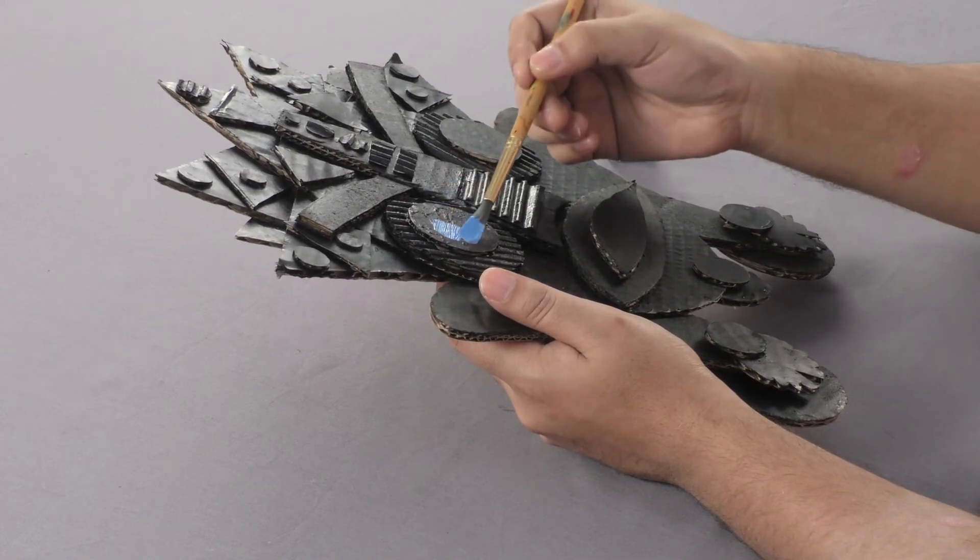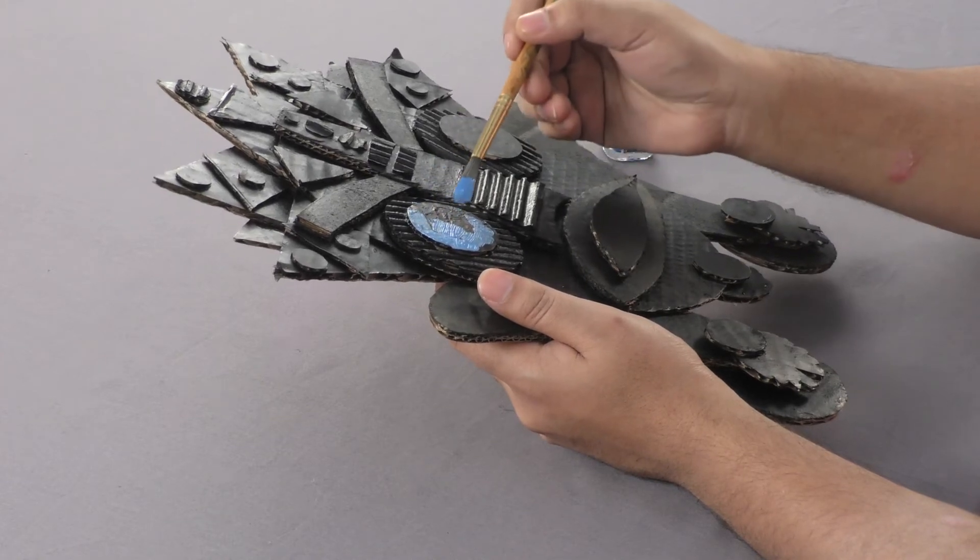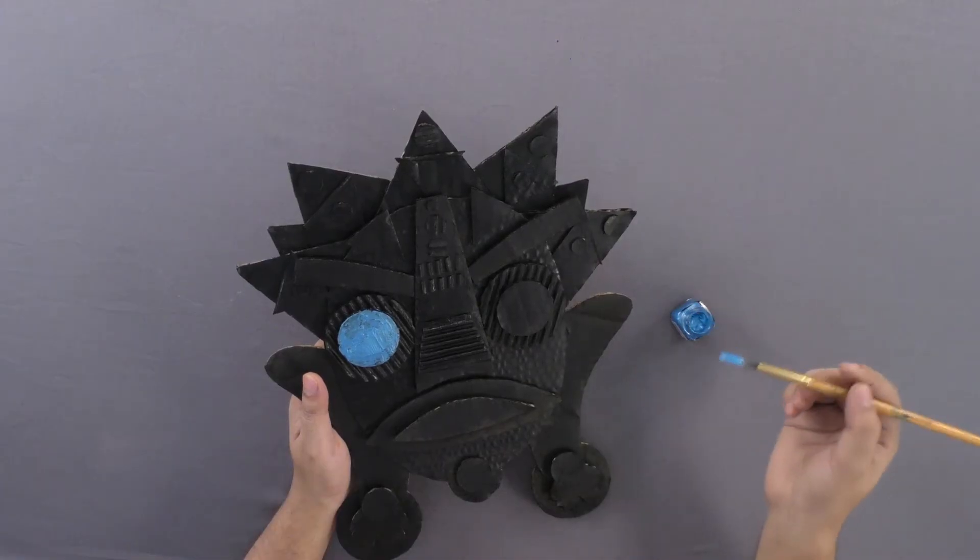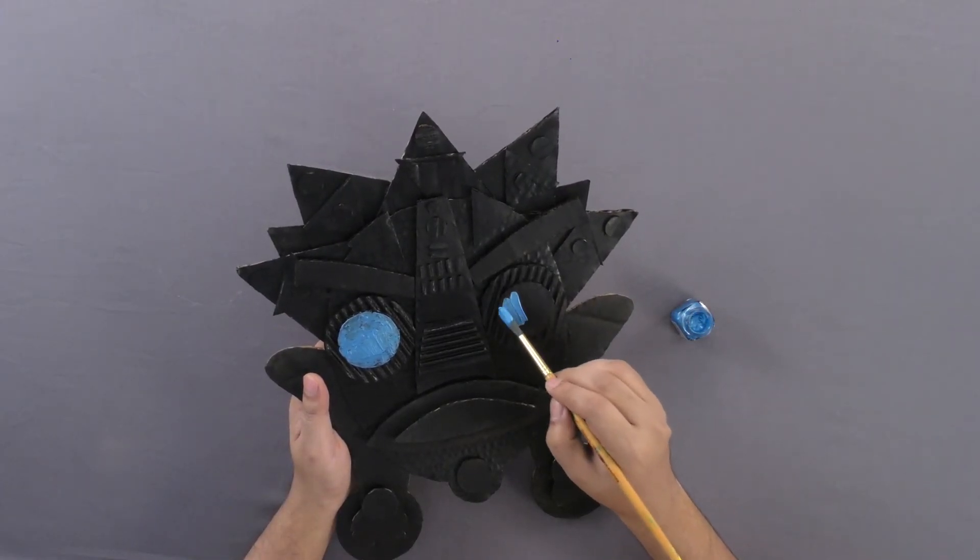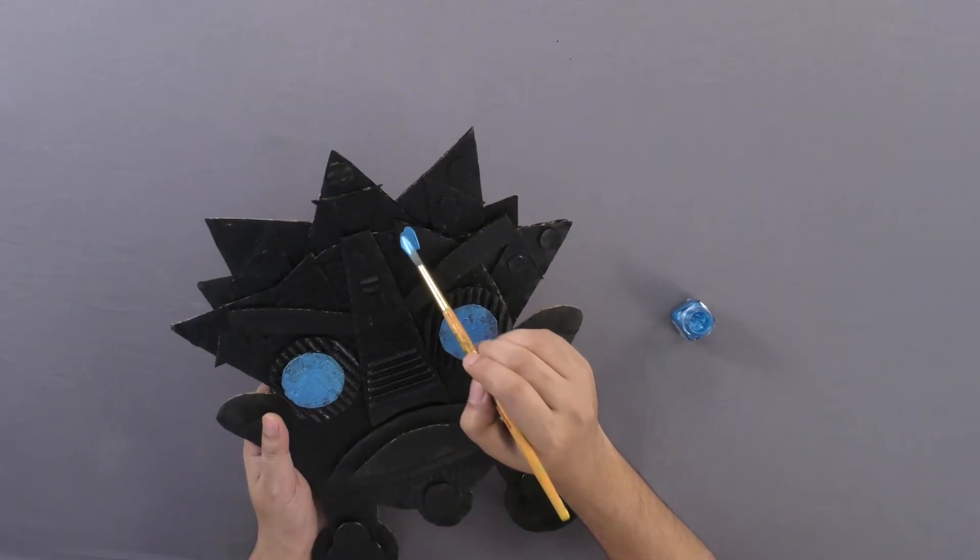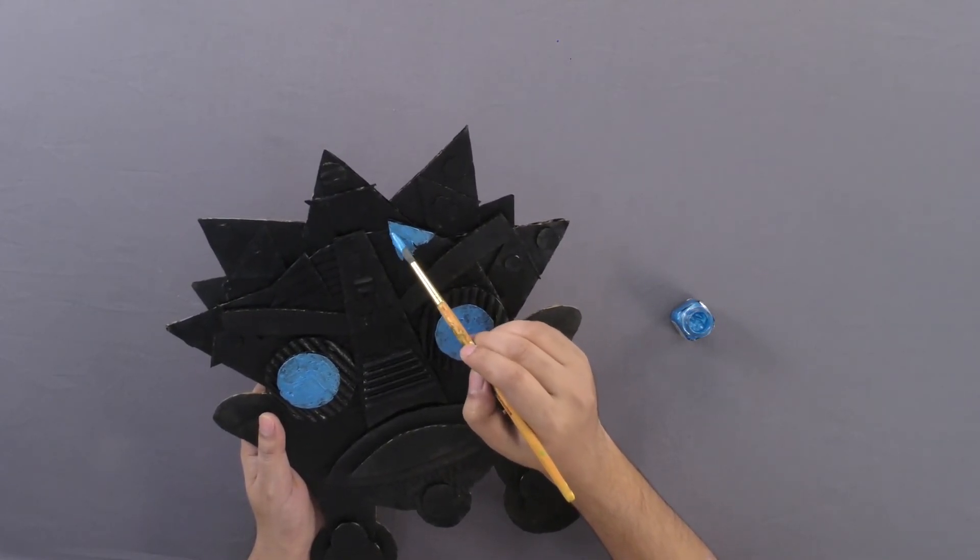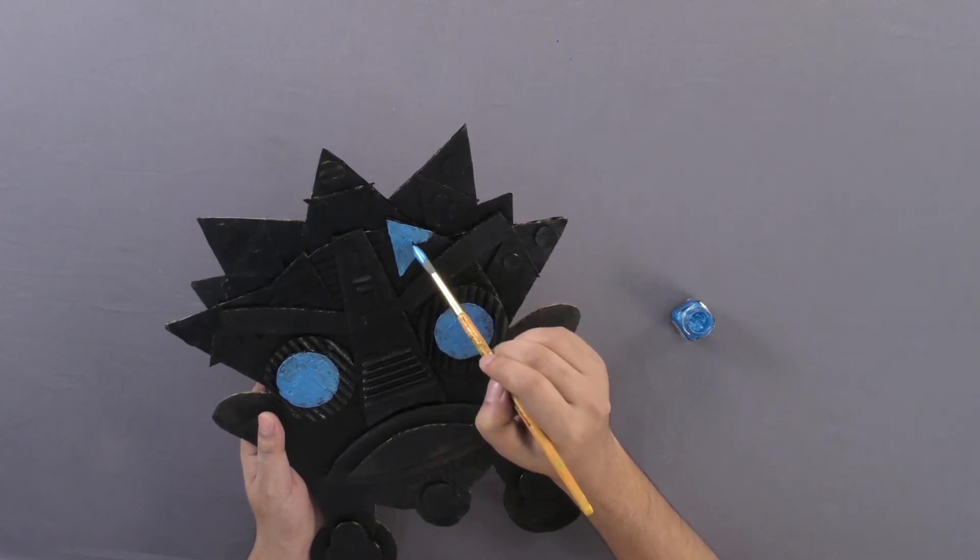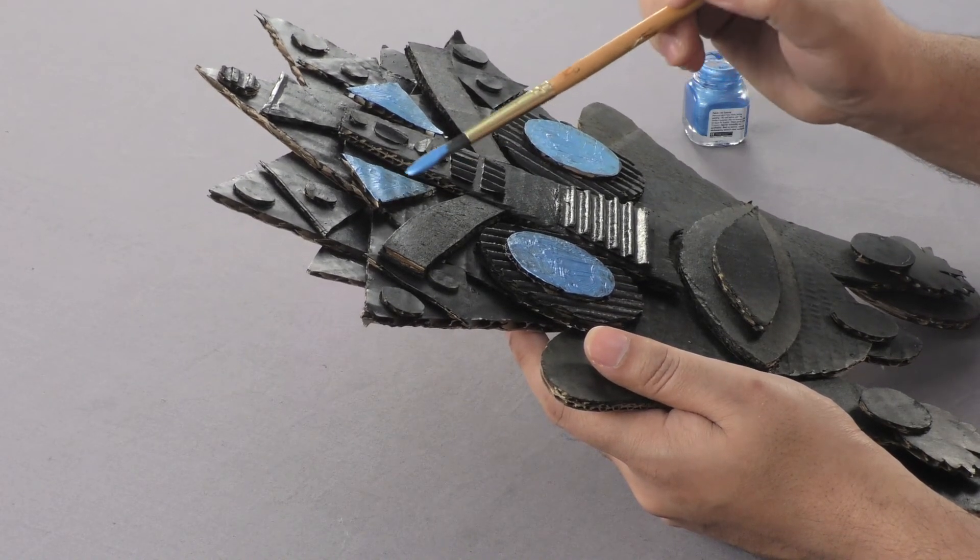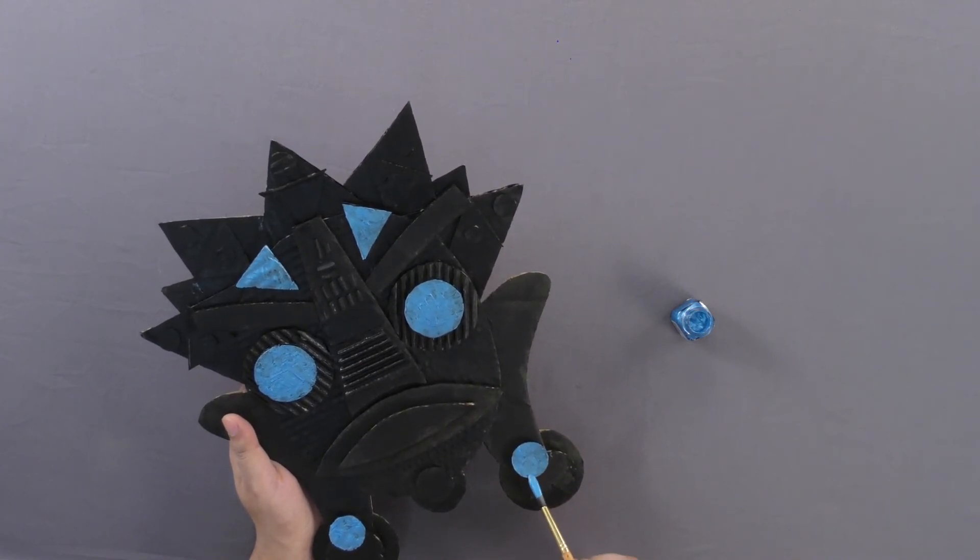After the black color dries, decorate the mask with different pearl fabric colors. We are using blue color first.